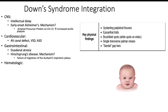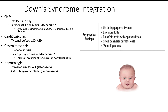Hematologically, Down syndrome patients are going to have ALL after the age of 5 and megakaryoblastic AML before the age of 5. That age-5 cutoff is really going to be helpful for you to understand.